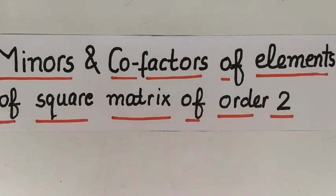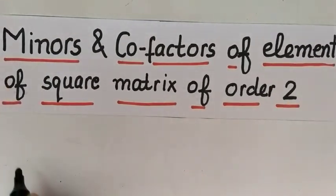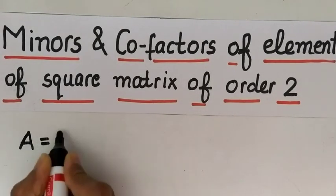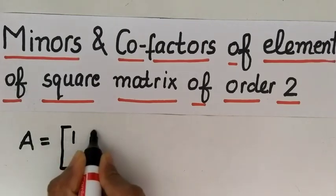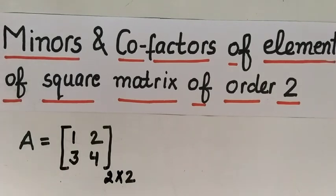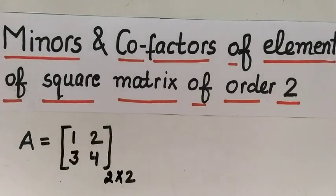Let us understand with the help of an example. We have matrix A equal to [1, 2; 3, 4] — it is of order 2. In this matrix there are 4 elements, and we will find minors and cofactors of all 4 elements. So there will be 4 minors and 4 cofactors. First we will find minors, and after that we will find cofactors.